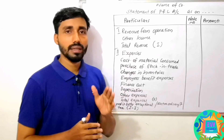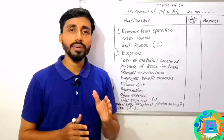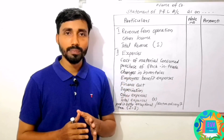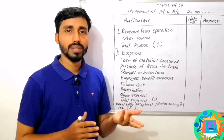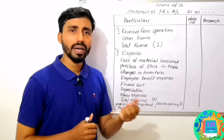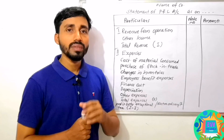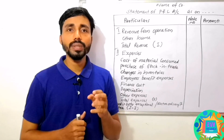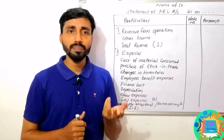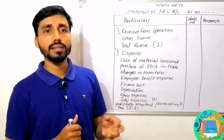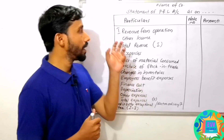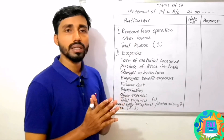We have to discuss the revenue from operations. This is the company's operational and all revenues. This includes the sales of products and the sales of services. We will discuss the operating income and the revenue from operations.